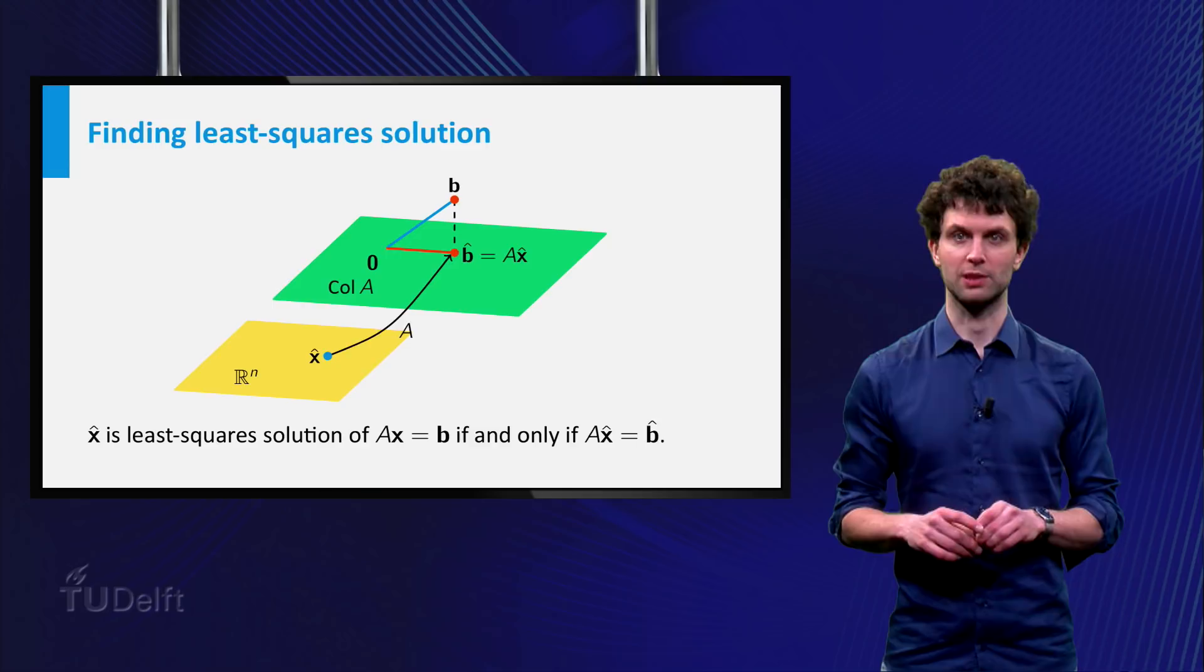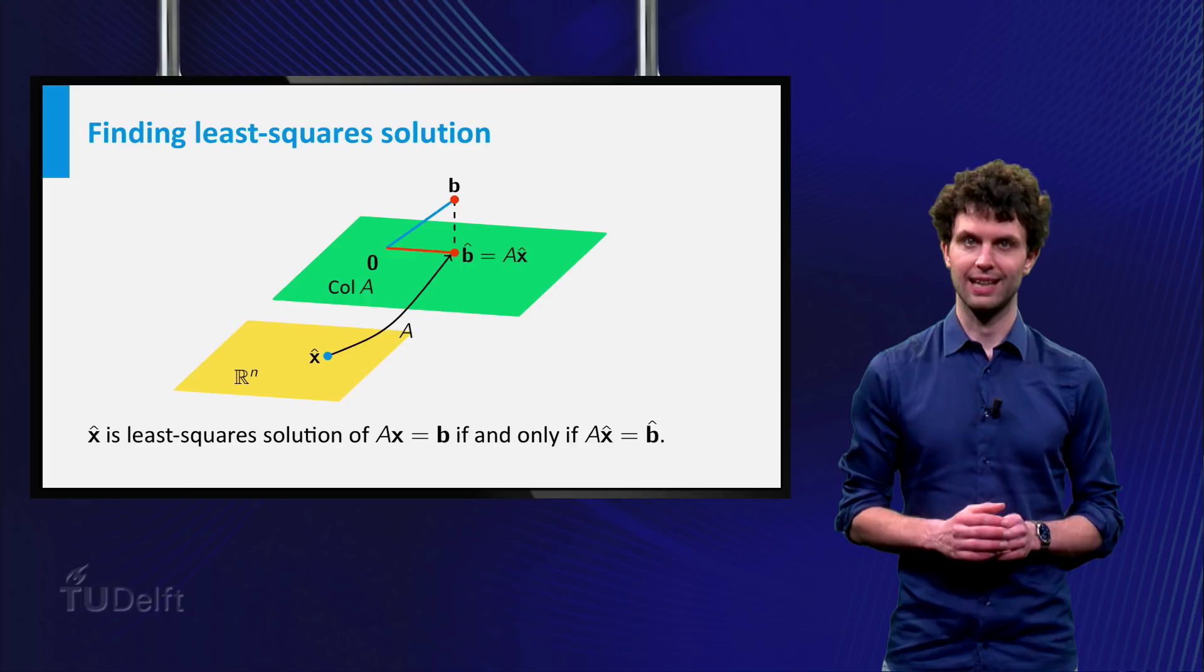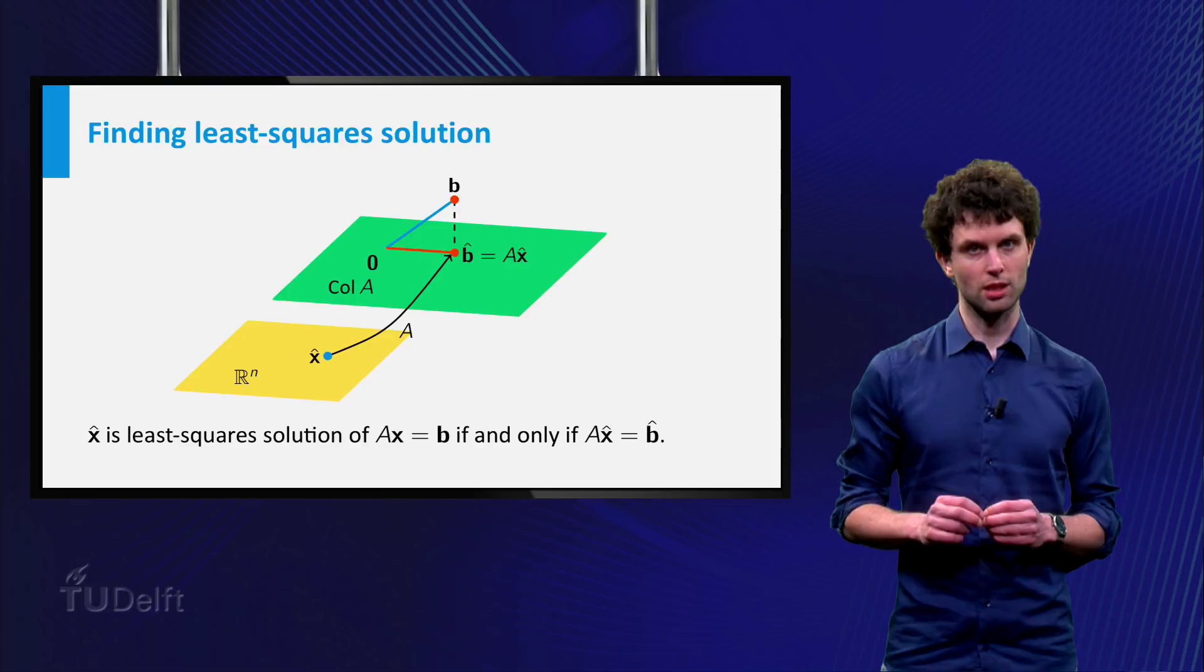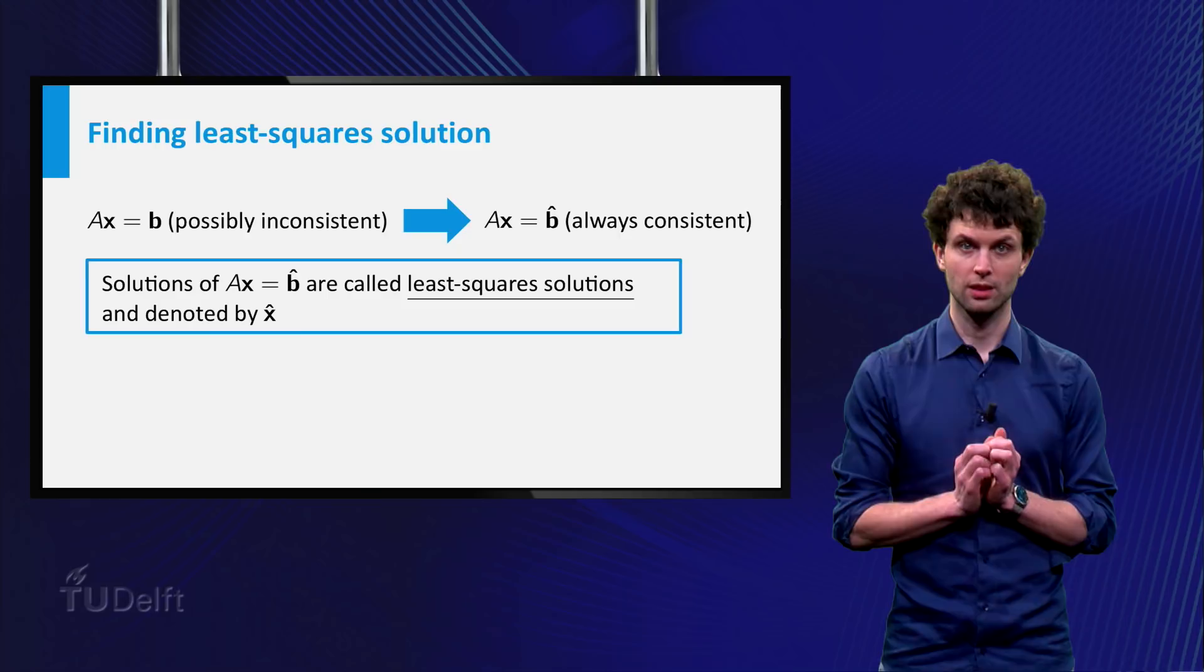Also note that if the original system Ax = b is consistent, then any least square solution is in fact an exact solution. Because in that case the distance between Ax and b can be zero.